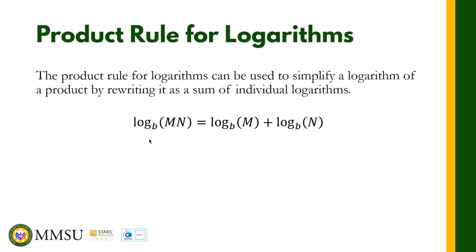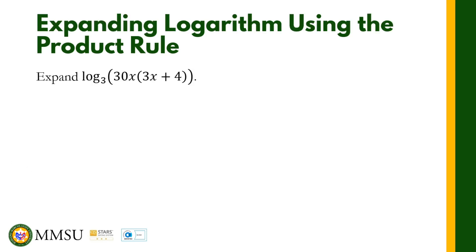As you can see, if we have a logarithm of a product m and n — so m times n — we can actually separate these two factors by summing them up individually with logarithm in base b. That's how we apply the product rule for logarithms.